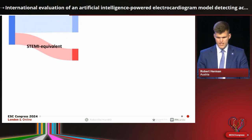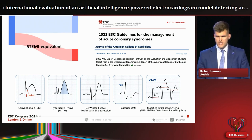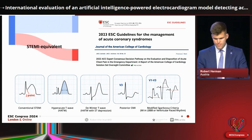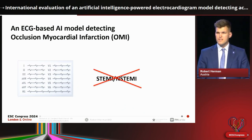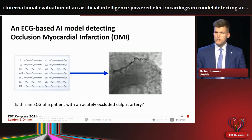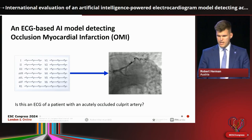The guidelines recommend several STEMI equivalent ECG patterns to improve the detection of coronary occlusion. However, these patterns are not ideally detected at the first point of contact. To solve this, we've developed an AI model that doesn't look at the traditional STEMI or non-STEMI approach. We've trained a deep neural network that asks: is this an ECG of a patient with an acutely occluded culprit coronary artery for whom we should trigger an immediate cath lab activation?